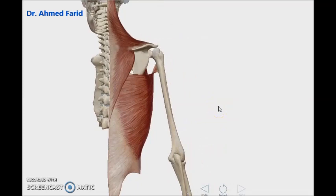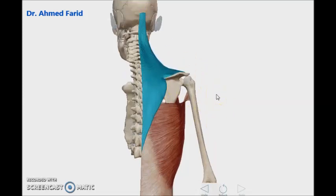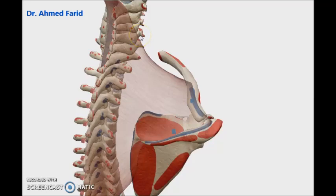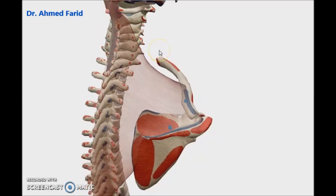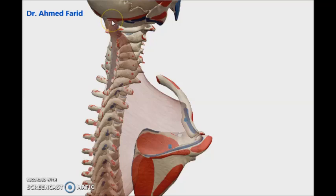Now let's refresh our view to talk about each muscle regarding its origin, insertion, and action. This is the trapezius muscle. As you see, it has a wide origin from the back of the skull, cervical region, and thoracic region. It has three origins: from the back of the skull, the occipital origin from the external occipital protuberance and superior nuchal line — you can say it's the occipital origin from the occipital bone of the skull.